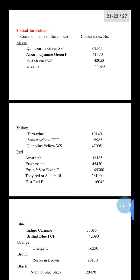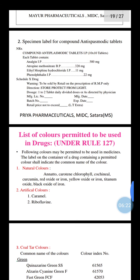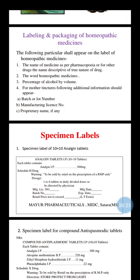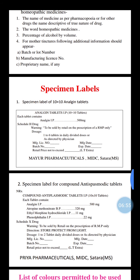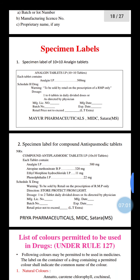That is all for today's lecture. In the next lecture you will see the remaining part of this chapter. Today you covered the labeling requirements of homeopathic medicine: the name of the medicine as per pharmacopoeia, the word 'homeopathic medicine' on the label, percentage of alcohol by volume, and for mother tincture, the batch number, lot number, manufacturing license number, and proprietary names.